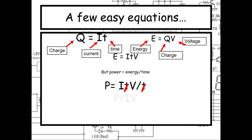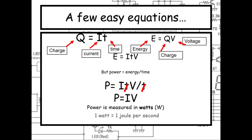Power equals energy divided by time, so we get power equals ITV divided by T. The T and the divided-by-T cancel out, and we get P equals IV. Power is measured in watts, and one watt is equal to one joule per second.